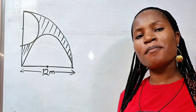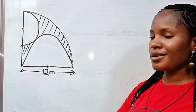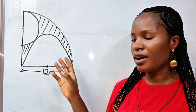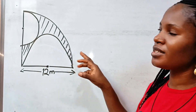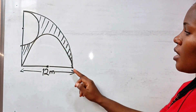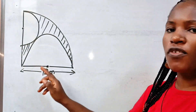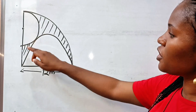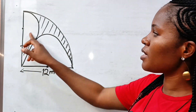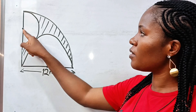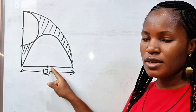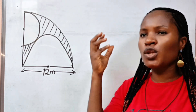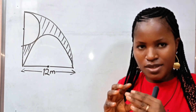Hello lovely friends, welcome back to my channel. I have to apologize — this is meant to be a semicircle, but since I'm drawing freehand, just assume this is a semicircle. This is a quadrant, that is one-fourth of a circle. The equation says we should find the area of the shaded portion. We need to organize and think about how to get the value first.